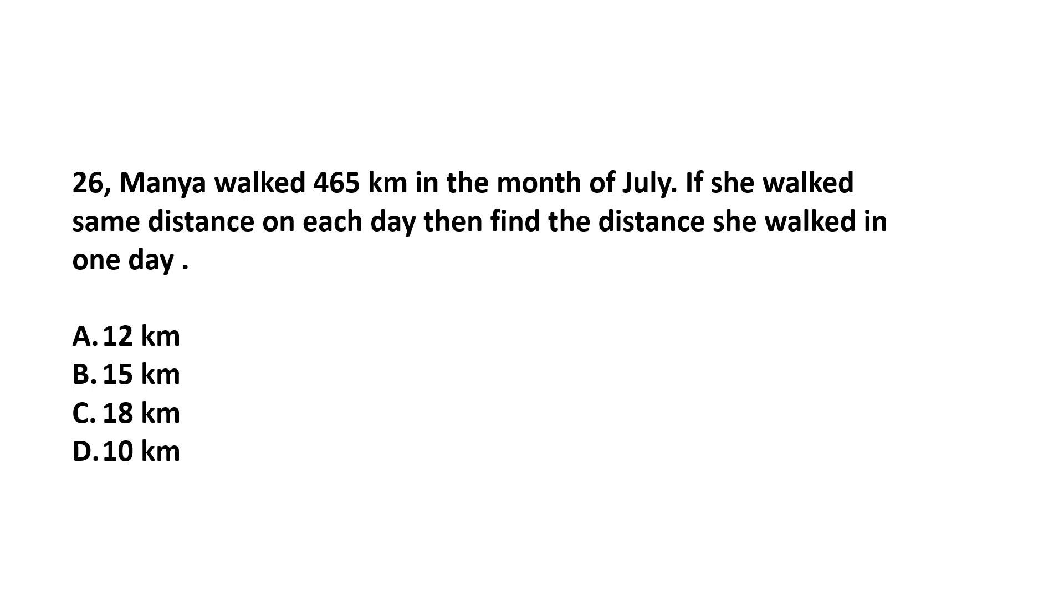Question number 26. Mania walked 465 km in the month of July. If she walked same distance on each day, then find the distance she walked in one day. She walked 465 km in the month of July. And there are 31 days in the month of July. On each day, she walked 465 divided by 31. If we divide, 465 divided by 31, 31 ones are 31. And here, 5. 6 minus 1 is 5, 4 minus 3 is 1. This is 5. And 31 multiplied by 5 is 155. So he walked 15 km each day. Answer is option B.